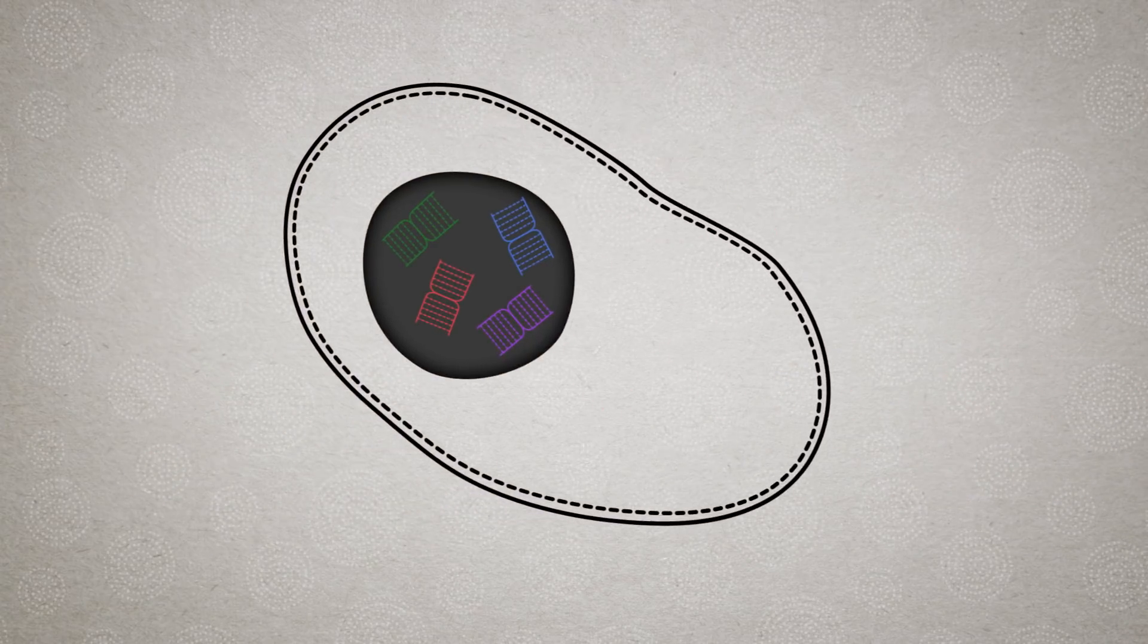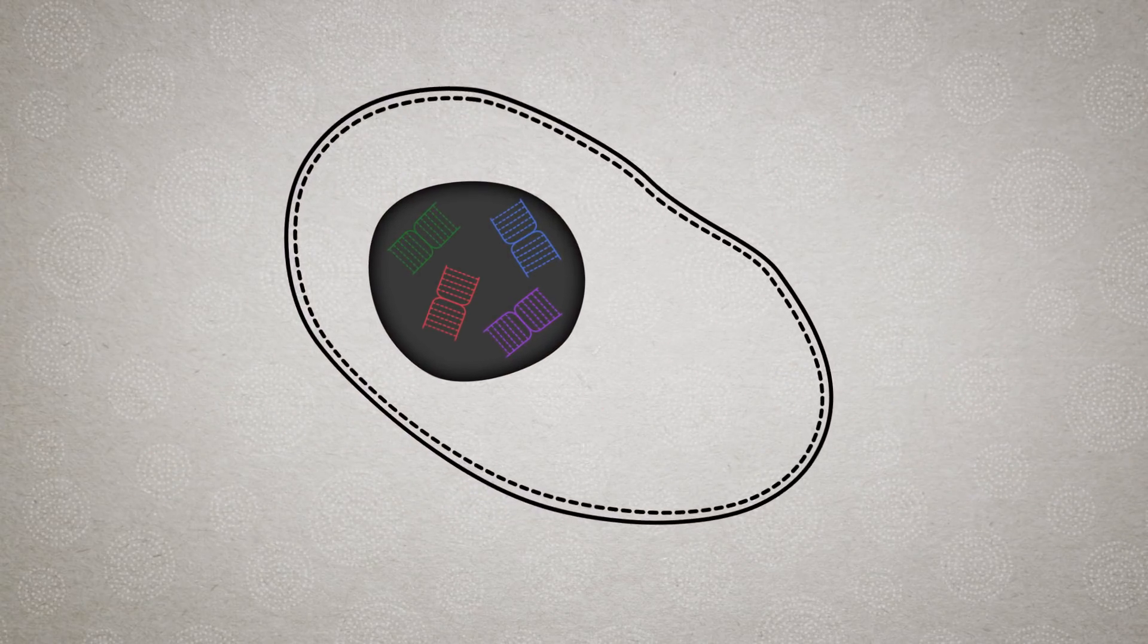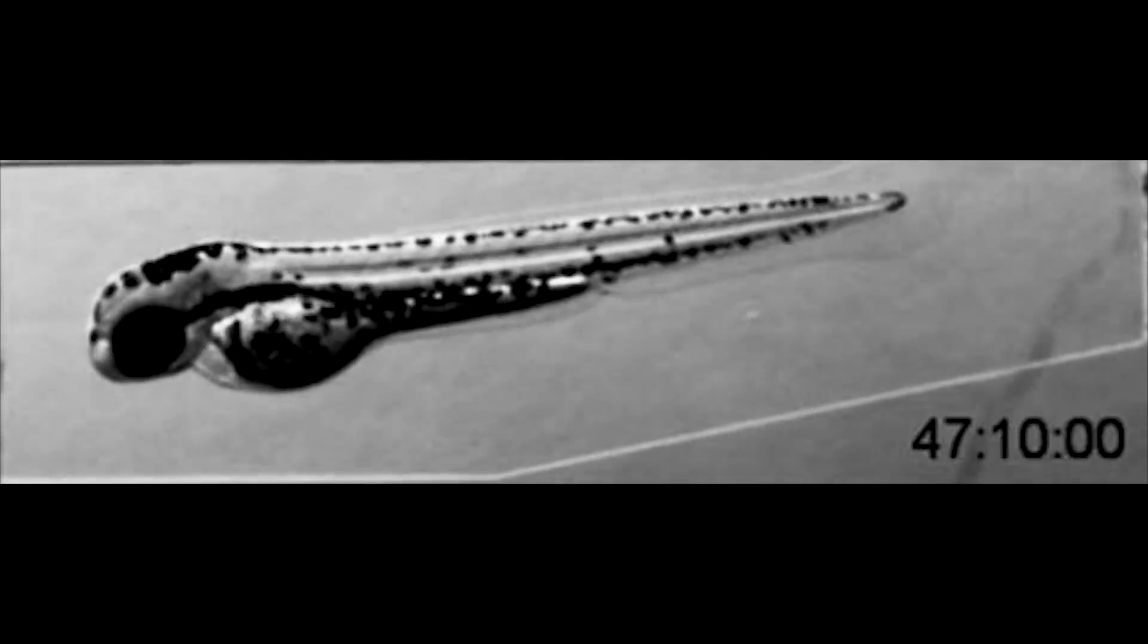By the end of the experiment, the combinations of barcodes reveal how the cells are related. Thus, they could trace each zebrafish cell's fate through time to see how a single cell gave rise to a variety of specialized cells, such as heart, nerves, and skin.